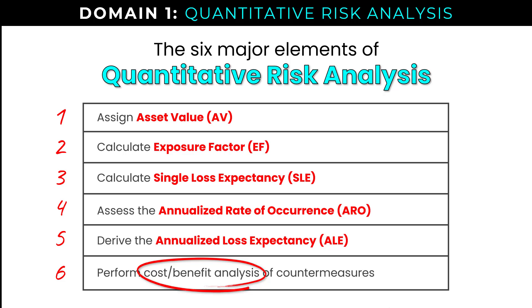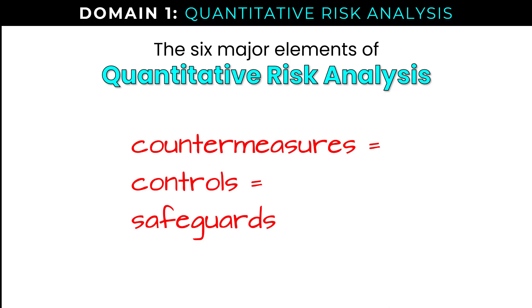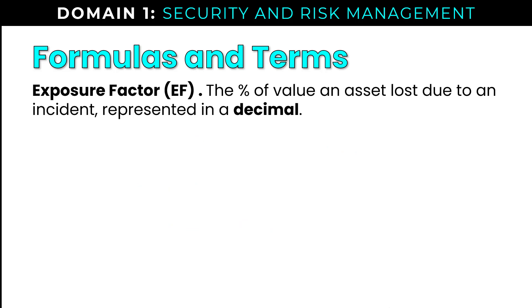Before we tear into an example, I want to cover some terms and touch on some of the formulas. When I mention countermeasures, controls, or safeguards, just consider these all equivalent terms for purposes of this discussion. Exposure factor is the percent of value an asset lost or might lose due to an incident, and it should be represented as a decimal in your formulas. It's often given to you as a percentage in the question, so you need to know how to convert that percentage to a decimal.